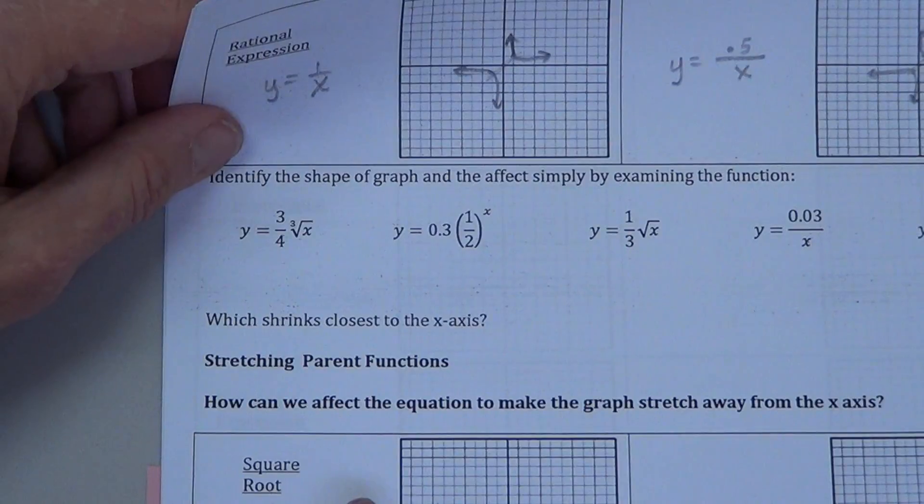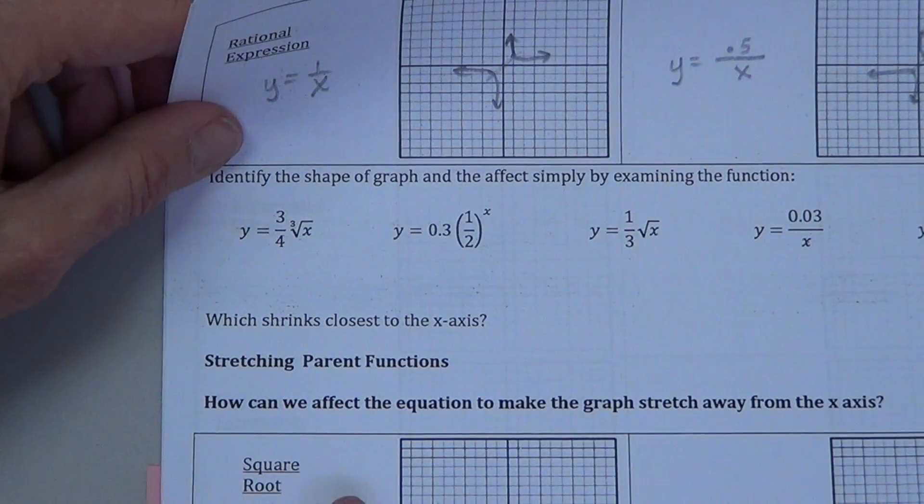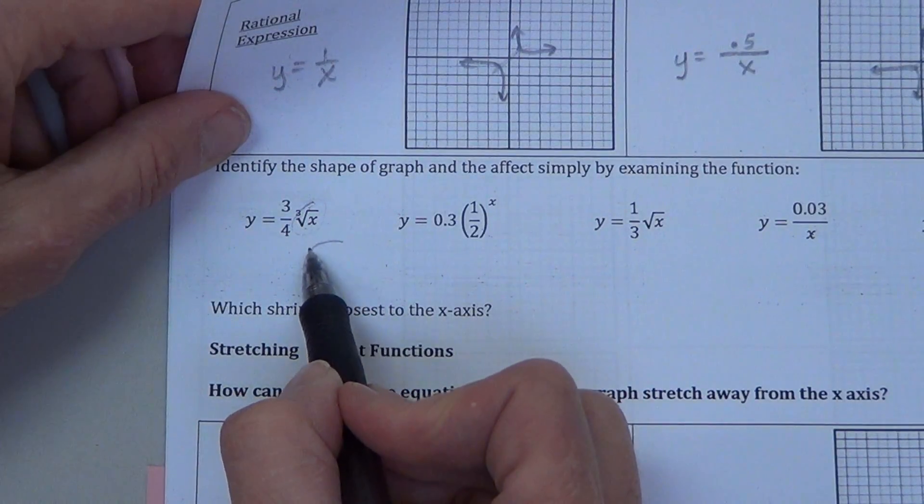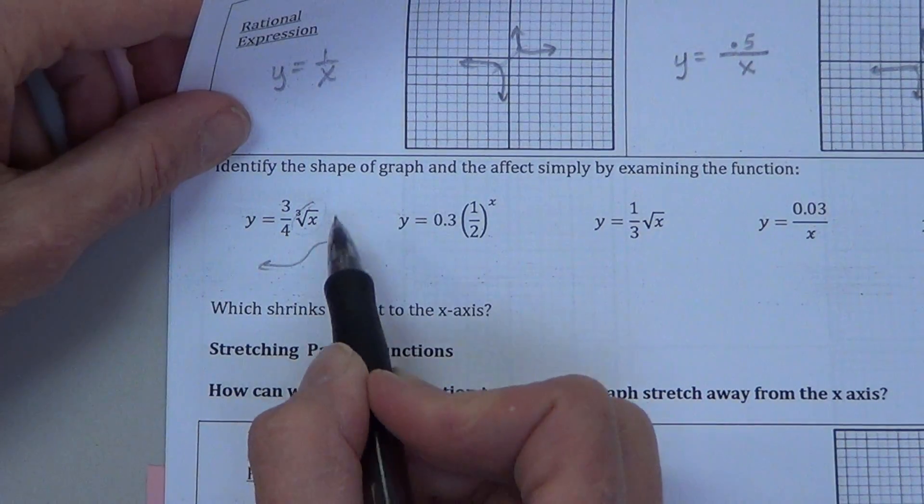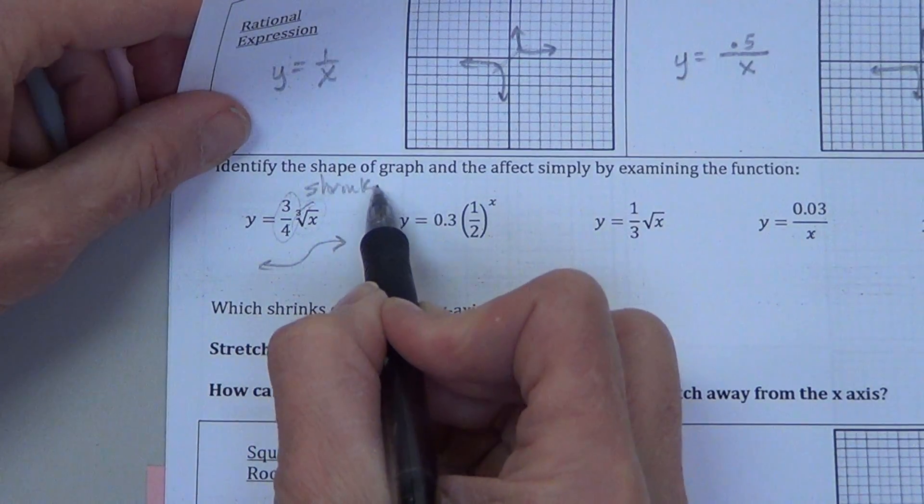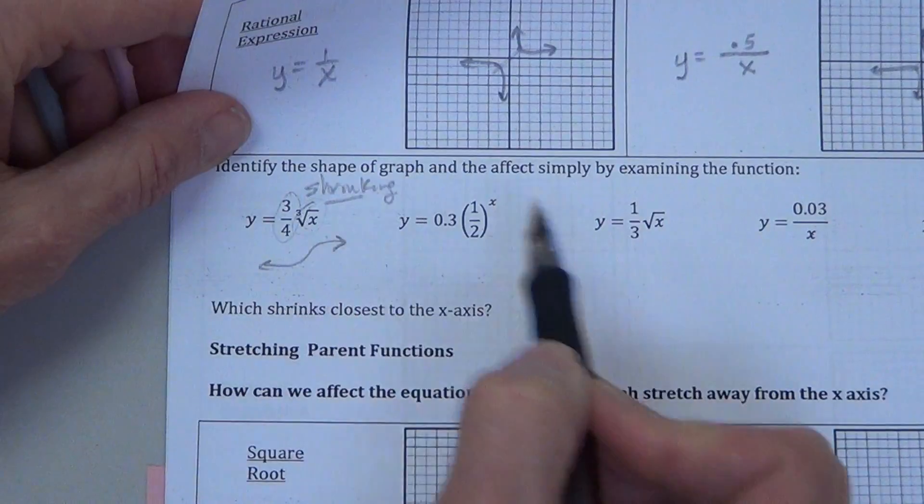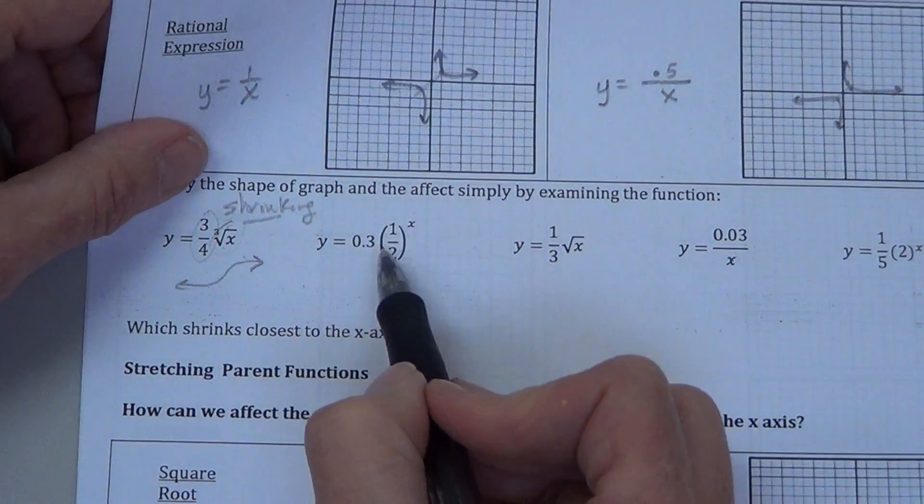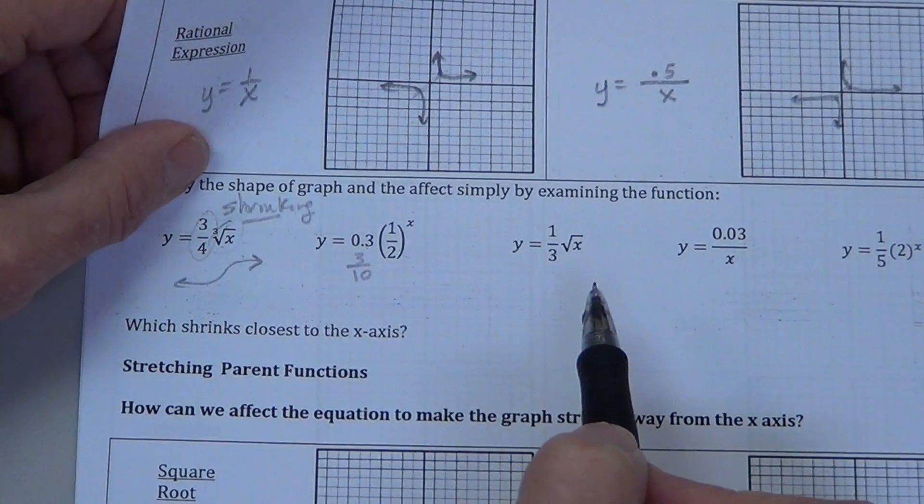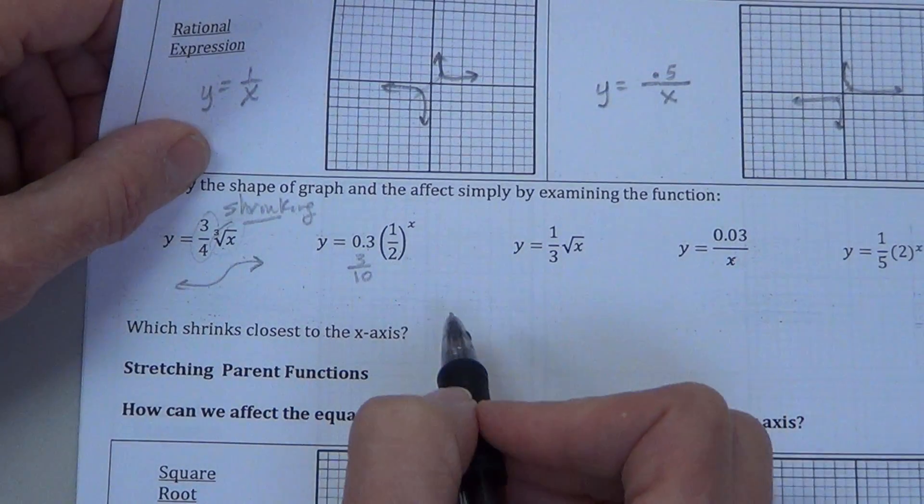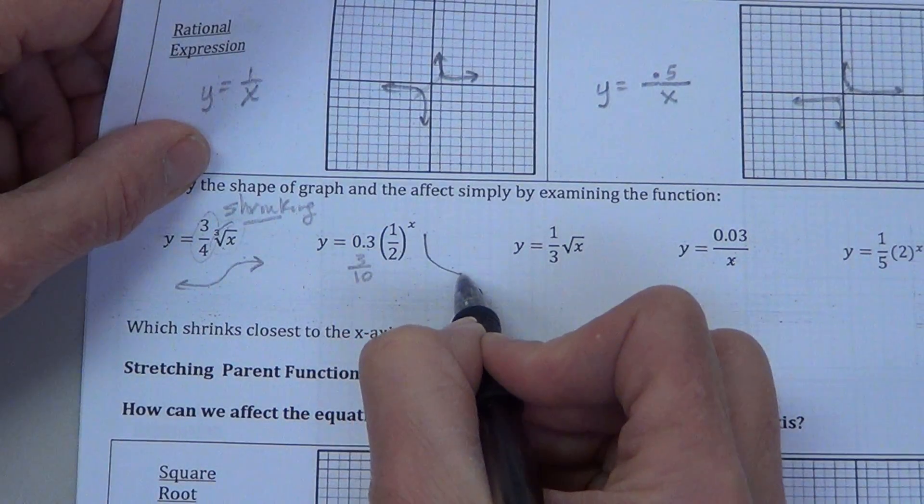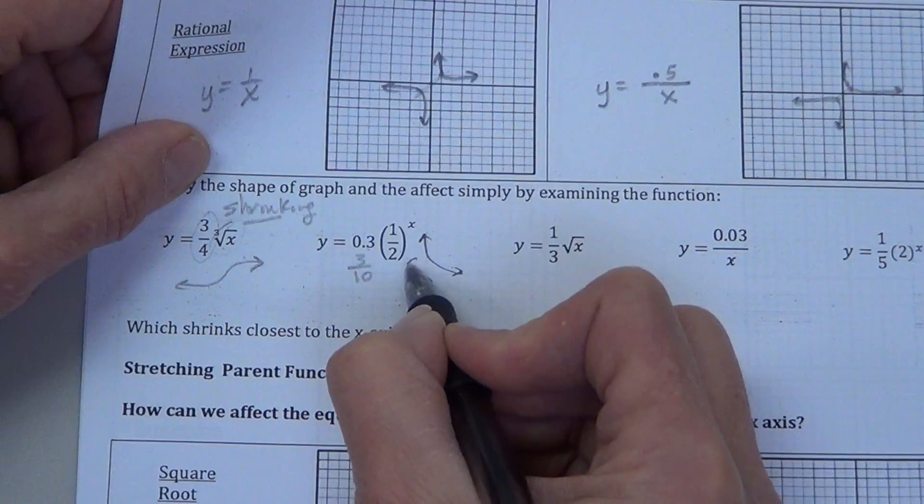Okay? Identify the shape of the graph and the effect simply by examining the function. Cube root, hopefully you can remember, it's this shape. 3 fourths, it's shrinking. So we're shrinking this shape. One half, now 0.3 is really 3 tenths, so again that's a fraction. Absolute value less than 1. So we say that it's the exponential decay going this way, and it shrinks.